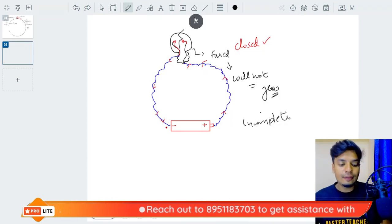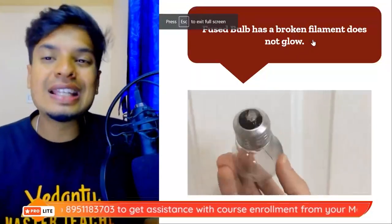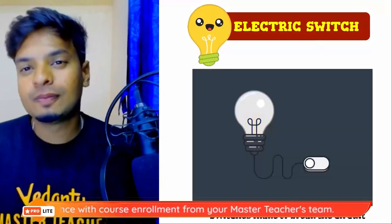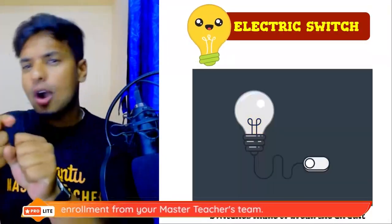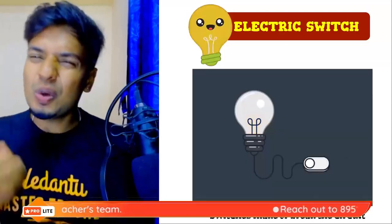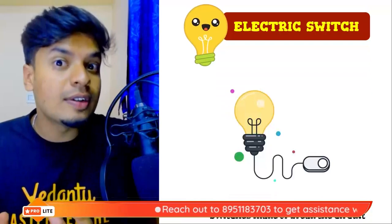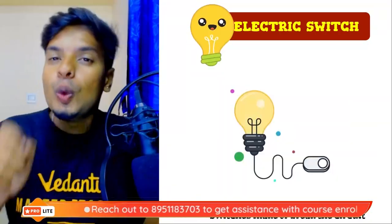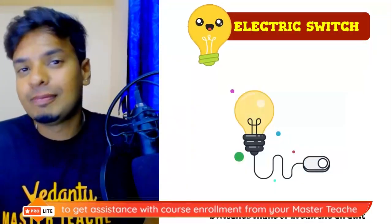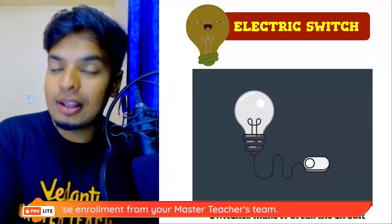A fused bulb has a broken filament and it won't glow at all. Now what about a switch? If you take off the wires the bulb will stop working; if you connect the wires again the bulb will start glowing. But you can't keep doing this for all the appliances we have — it's very dangerous to play with wires. We need a safety device to safely turn the circuit on and off. That is a switch. A switch is used to either make or break a circuit.